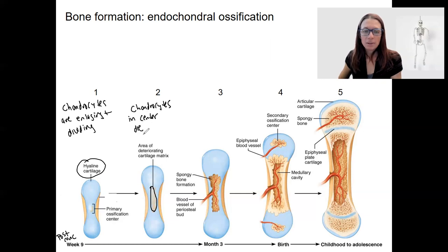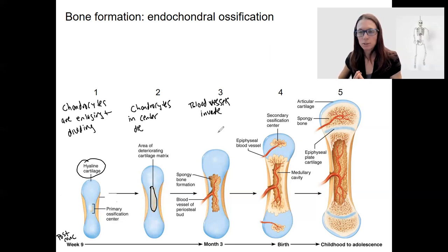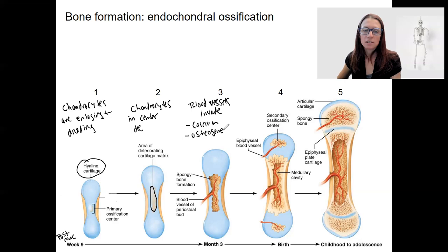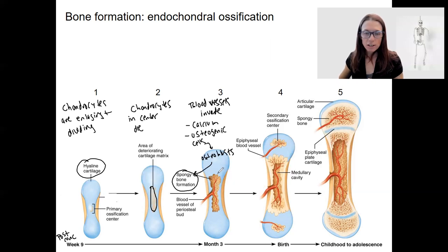When the chondrocytes die, around that time, blood vessels begin to invade. The blood vessels invading is important for a couple of reasons. One, bone is vascular, so this makes sense — we have to have blood vessels there. But these blood vessels also bring in calcium and osteogenic cells. Osteogenic cells are going to develop into osteoblasts, and now we have a way to form bone. So spongy bone forms in this primary ossification center.